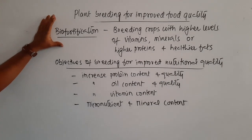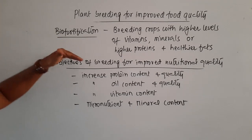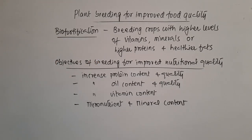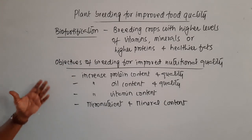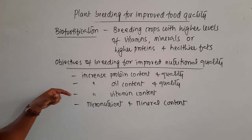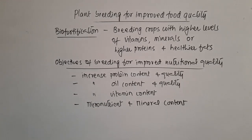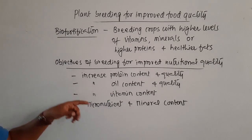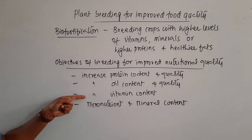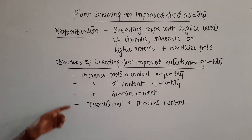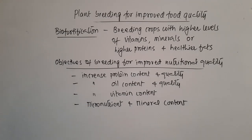Breeding or developing crops with higher levels of vitamins, minerals, proteins, and healthier fats is what we call biofortification. The objectives of breeding for improved nutritional quality include increasing protein content and quality in vegetables and fruits, increasing oil content and quality, increasing vitamin content, and increasing the micronutrient and mineral content in available food sources.